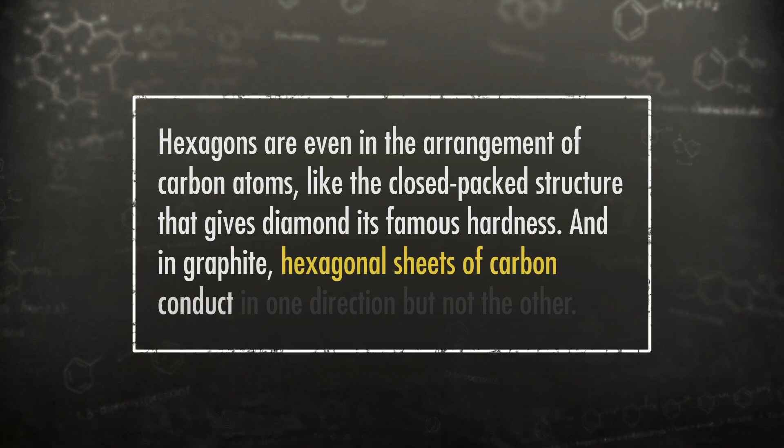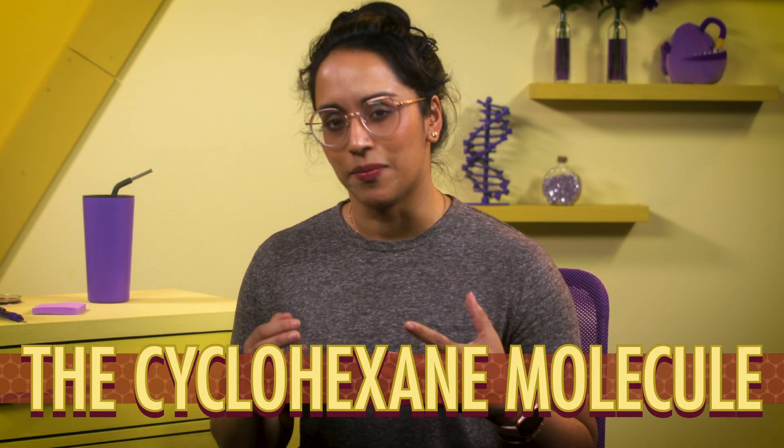And in graphite, hexagonal sheets of carbon conduct in one direction but not the other. In this episode, we'll uncover the secrets of one of organic chemistry's favorite manifestations of this shape, the cyclohexane molecule.